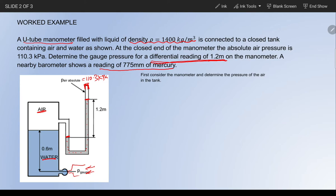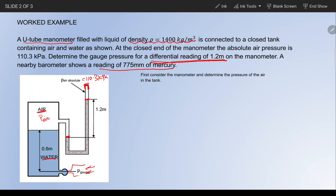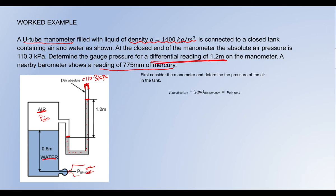First, let us consider just the manometer and determine the pressure of air in the tank. The pressure of air in this tank is equal to the pressure of the liquid plus the absolute pressure — the pressure due to the entire liquid column is exerting pressure on the air. So: pressure of air = absolute pressure in the manometer + pressure due to liquid column.